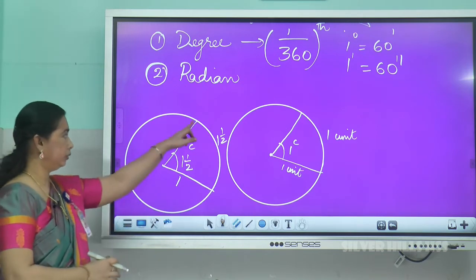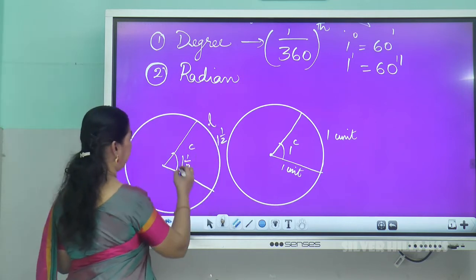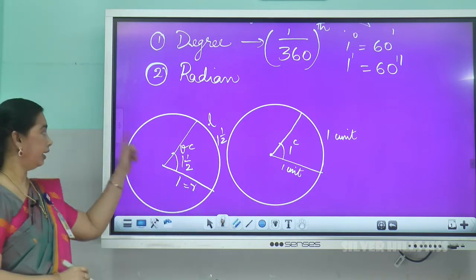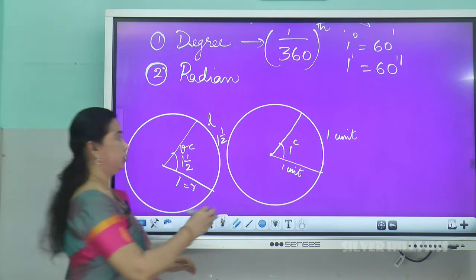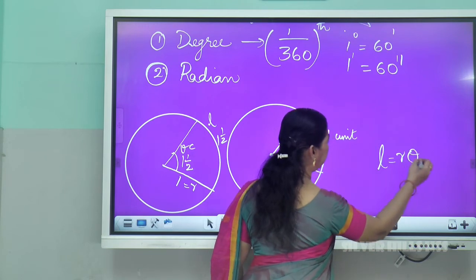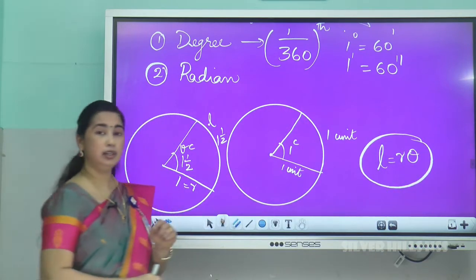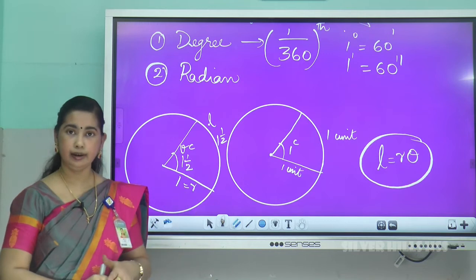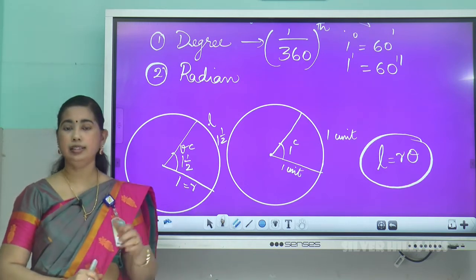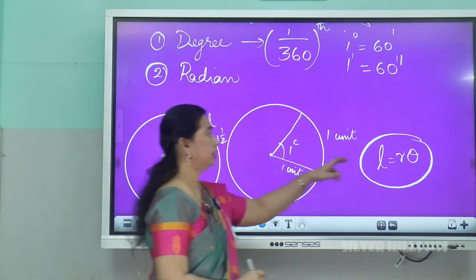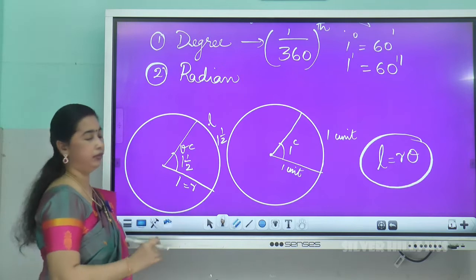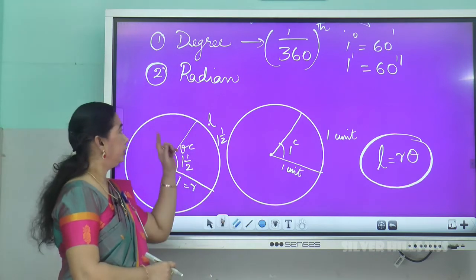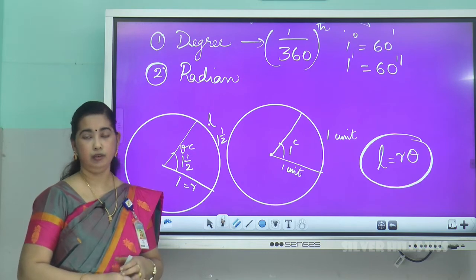There is a relation connecting arc length l, radius r, and angle θ: the relation is l = rθ. One important condition is that θ must always be in radian measure. Here, l is the arc length, r is the radius, and θ is the angle subtended by that arc length at the center. This relation can only be used when θ is in radian measure.